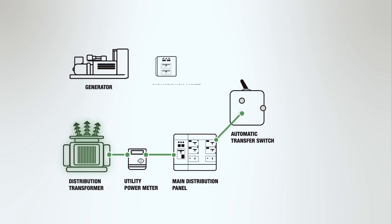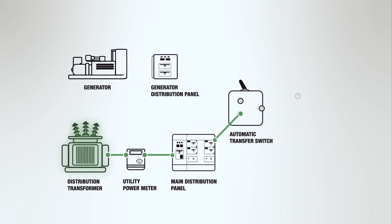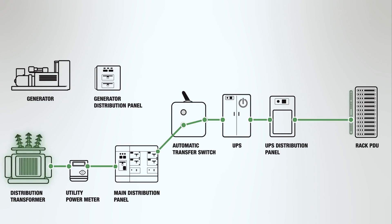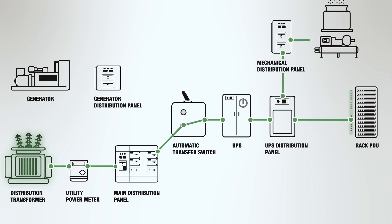The power feed goes on to the uninterrupted power supply, which always powers the load either from the utility, an internal power source such as batteries, or the backup generator. The UPS may also provide backup power to mechanical loads, such as cooling equipment that needs to continue operating when the utility power fails.